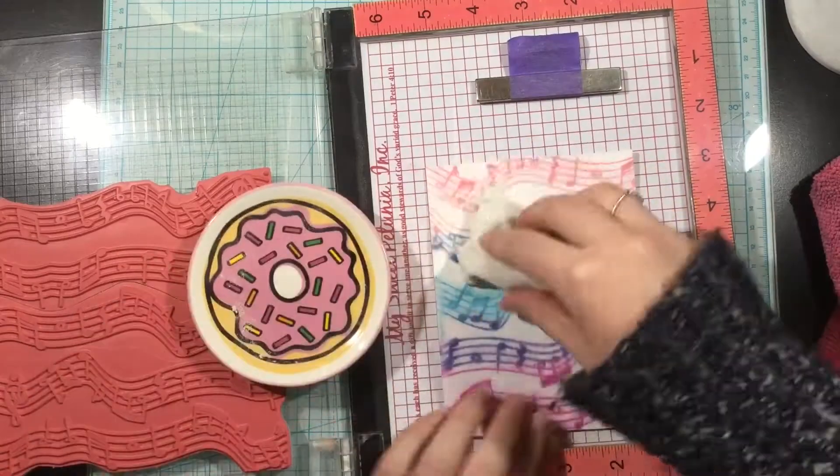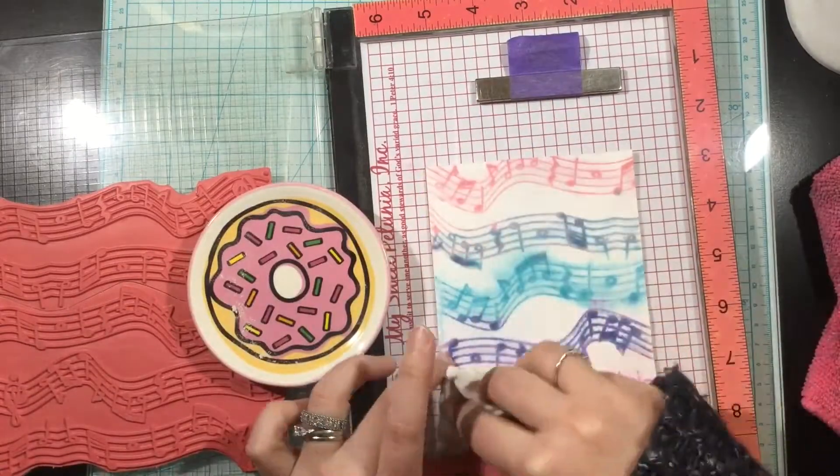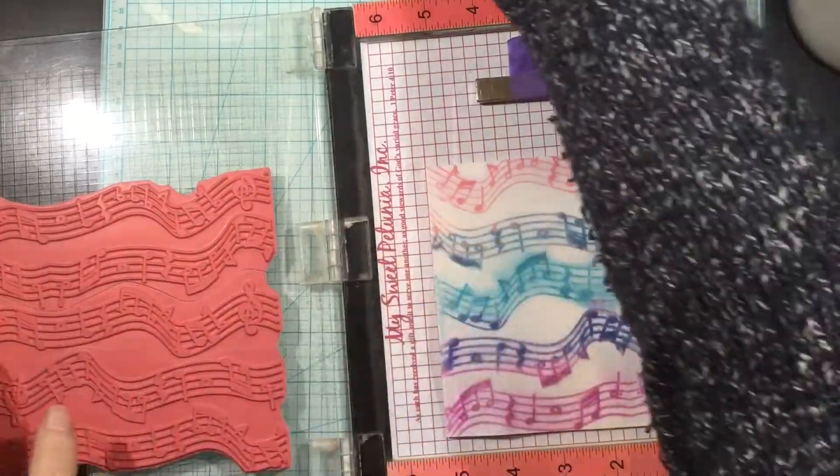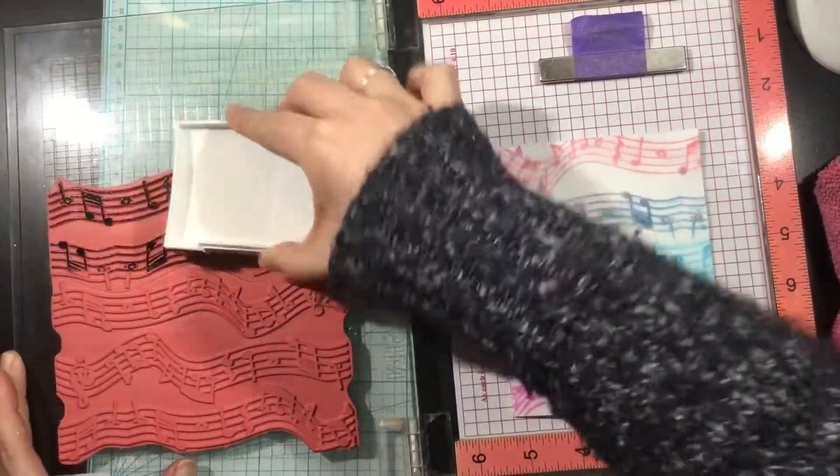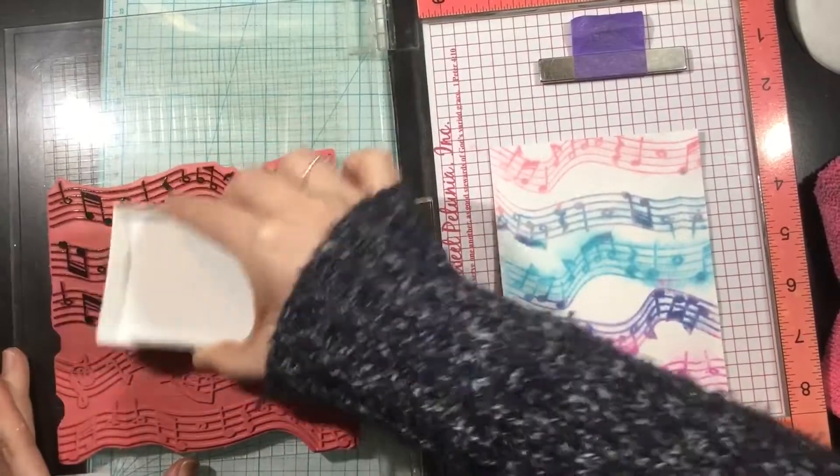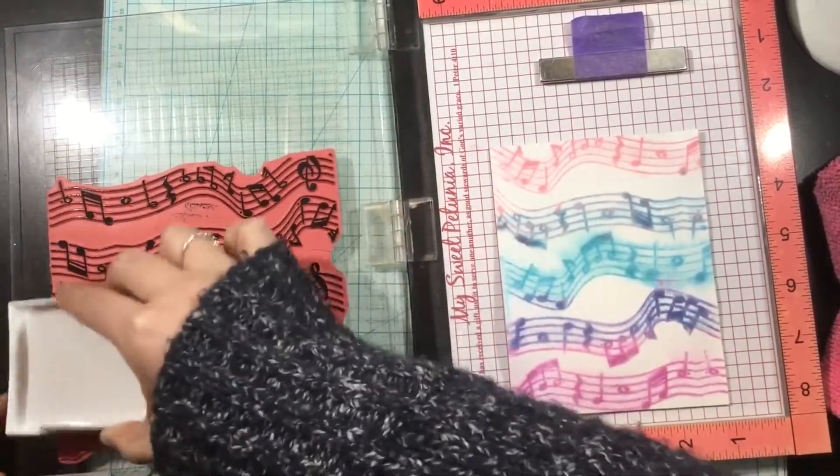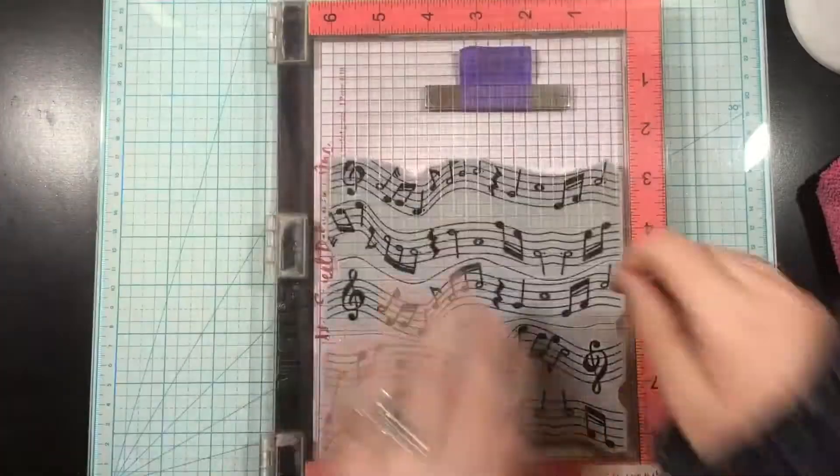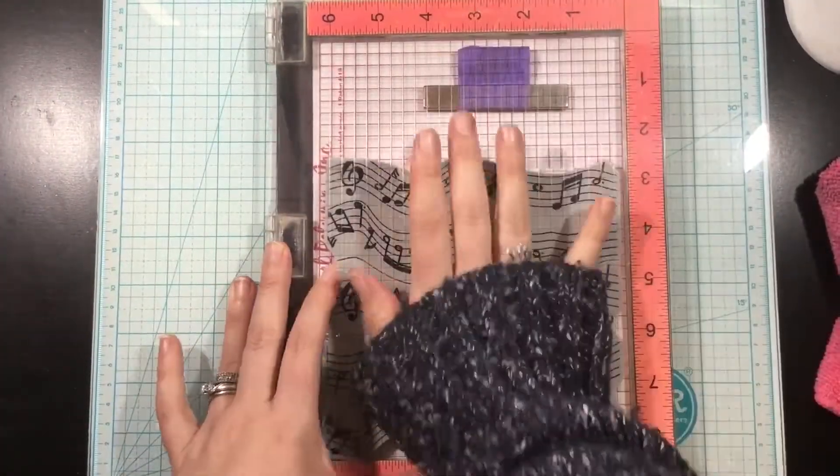And now comes the fun part. You could definitely leave your background just like this and have that kind of smoky watercolory effect, but I'm going to ink over this with some VersaFine Onyx Black ink. I did use my powder tool because I'm going to emboss this ink—again, I am impatient, and this ink will smudge. So I always emboss when I use my VersaFine ink.